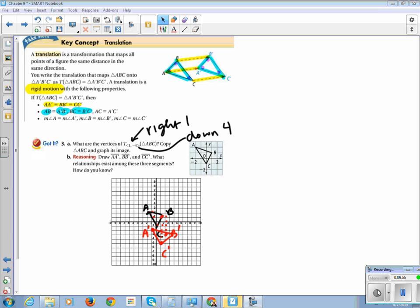What are the vertices of the translation? So A prime is at negative 2. I'm sorry, negative 1, comma, negative 2.